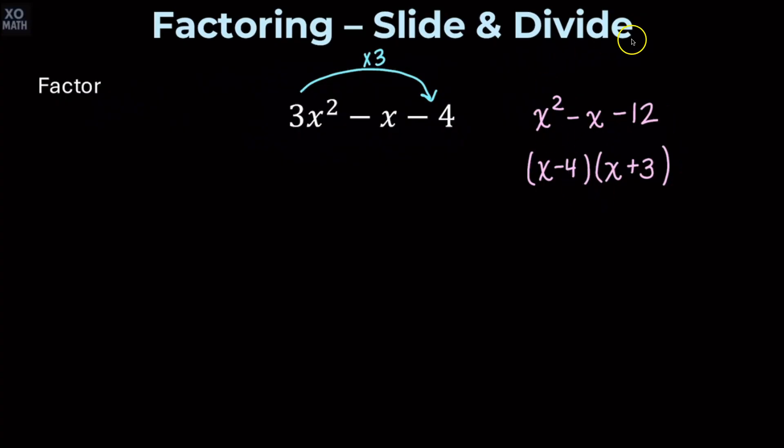We're not done. We need to do the divide part. Now, each of those numbers we just found, we're going to divide by 3. In the second factor, 3 over 3 reduces to the integer 1, so we have a factor x plus 1. In the first factor,